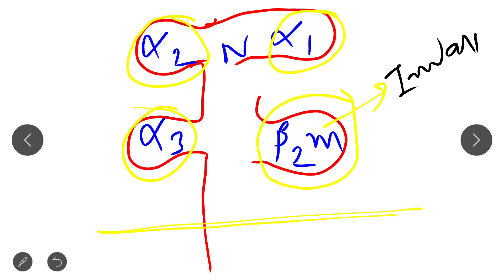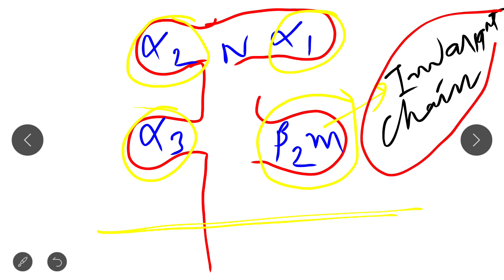The function of this invariant chain is that the Class 1 MHC molecule is attached to the cell membrane, and this attachment is non-covalent in nature. This attachment occurs due to the presence of the invariant chain. Because of this invariant chain, the attachment is possible. If the invariant chain is not there, then the attachment between the Class 1 MHC molecule and the cell membrane will not take place.